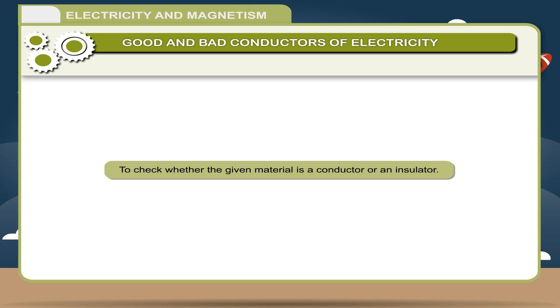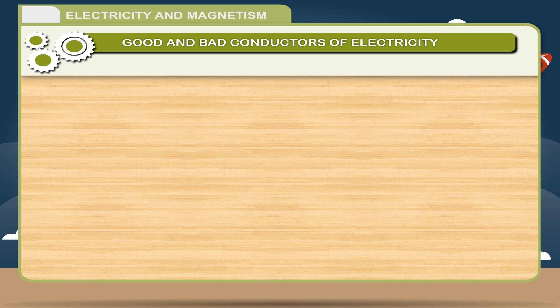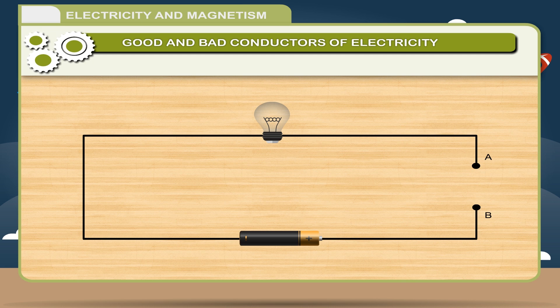Activity to check whether the given material is a conductor or an insulator. Take a dry cell, a small torch bulb and copper connecting wires. Connect these as shown in figure leaving a gap AB. With the gap circuit is not complete and bulb does not glow. Now take a paper clip and fit it in the gap AB. You will find that the bulb glows. Remove the clip. Now fit a rubber eraser in the gap. Does the bulb light up? In this way find out if the bulb lights up using different materials such as paper, copper wire, rubber, aluminum foil, wood, steel and so on. List out the good conductors and bad conductors of electricity.